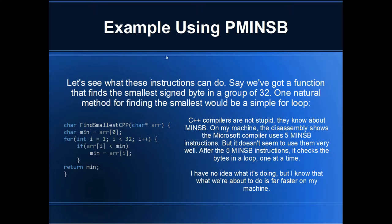Let's run through an example to see where this might help us speed up some code. We want to find the smallest signed byte in a group of 32. The function takes a char array — a signed byte array — and we know there are 32 bytes in it. One natural method would be just using a simple C++ loop. C++ compilers know about PminSB, and on my machine when I run this code with optimizations turned on, I can check the disassembly and see C++ uses PminSB five times — but for some reason this code runs really, really slow.